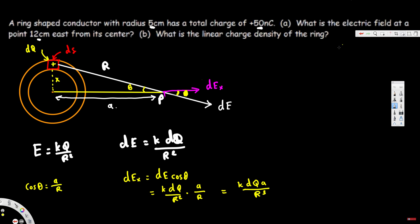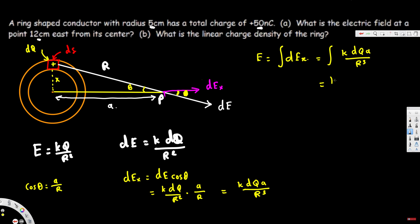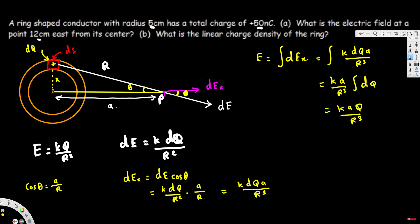To find the total electric field E, we integrate dEx. Integrating k·dq·a/r³ — since only dq is changing, the other values are constant and move to the front. So E = k·a/r³ · ∫dq, and integrating dq gives us q. Therefore: E = k·a·q / r³.